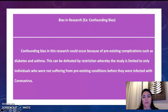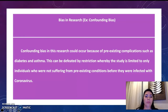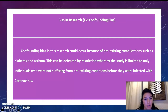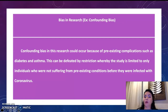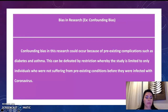Bias in the research. Confounding bias in the research could occur because of pre-existing complications such as diabetes and asthma. This can be addressed by restriction, whereby the study is limited to only individuals who were not suffering from pre-existing conditions before they were infected with coronavirus.